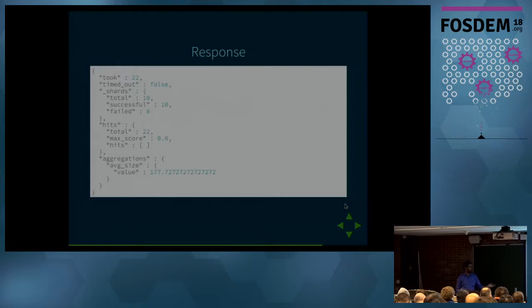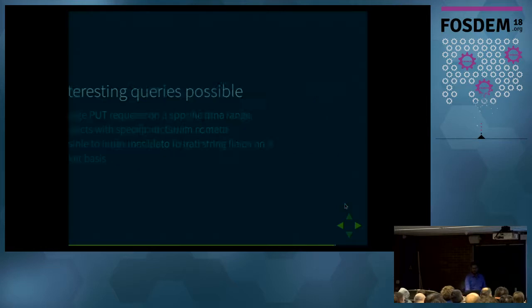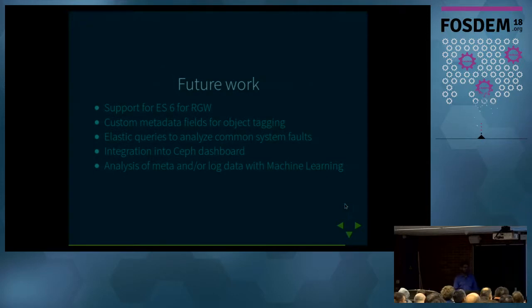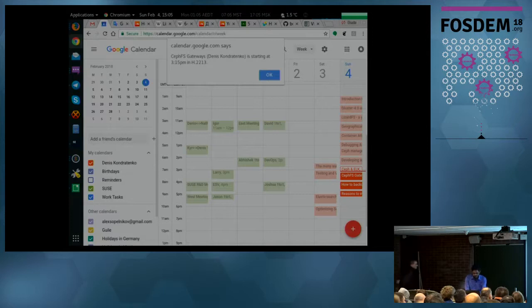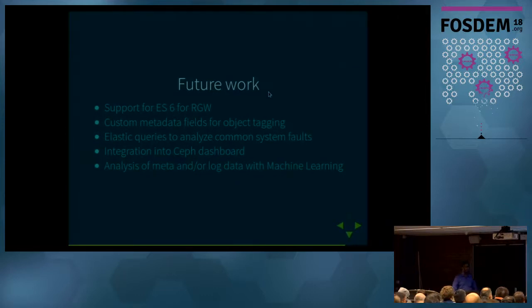Since it is Elasticsearch, you can aggregate queries pretty easily — you can get an average of total objects uploaded or do it on a date basis. For example, the total is 22 objects and the total size was 177 bytes. You can have queries on specific metadata content, which helps find data from specific users. As for future work, we currently have Elasticsearch support up to version 5 for Rados Gateway, so future work includes supporting Elasticsearch 6, custom metadata fields for object tagging, a Logstash plugin, and integration with the CEPH dashboard and machine learning from Elasticsearch.